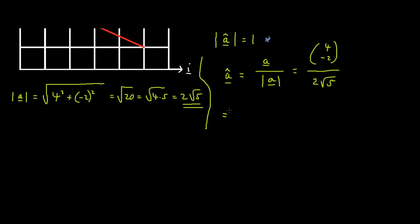we get 1 over 2 multiplied by root 5 multiplied by 4i minus 2j, which equals 4 over 2 multiplied by root 5i minus 2 over 2 multiplied by root 5j. This right here is the unit vector for the vector a.